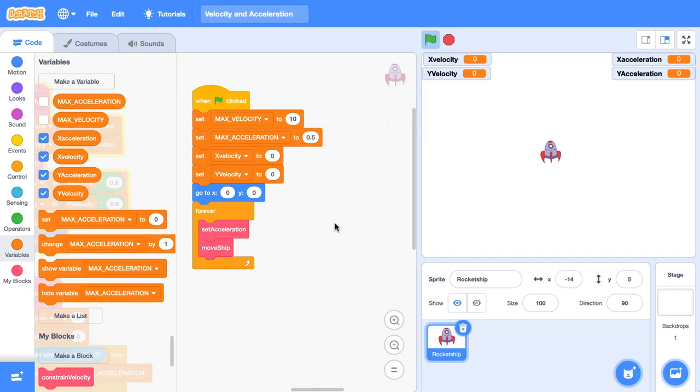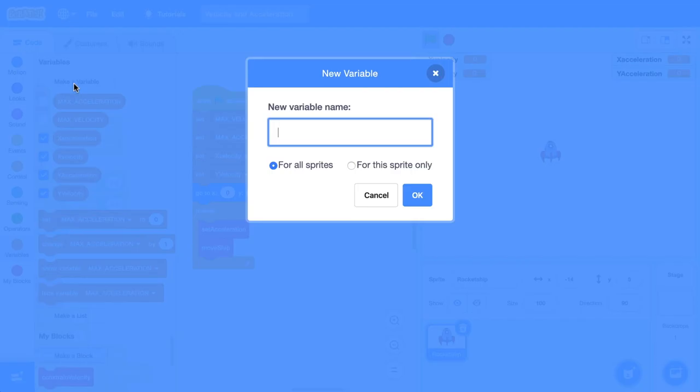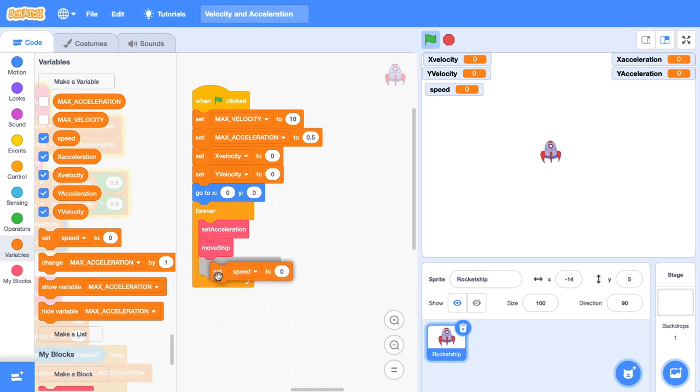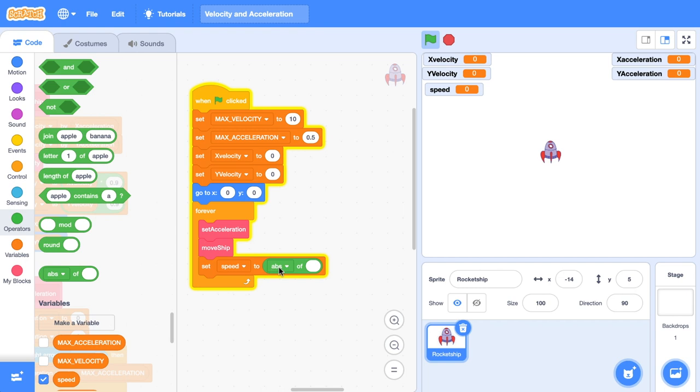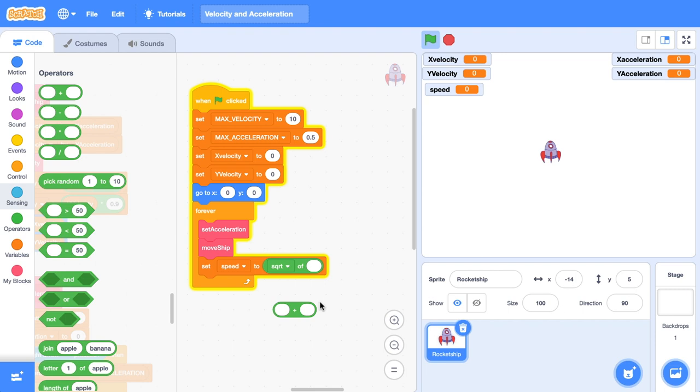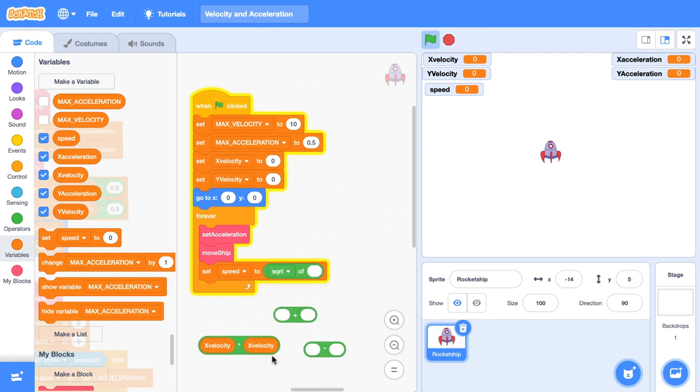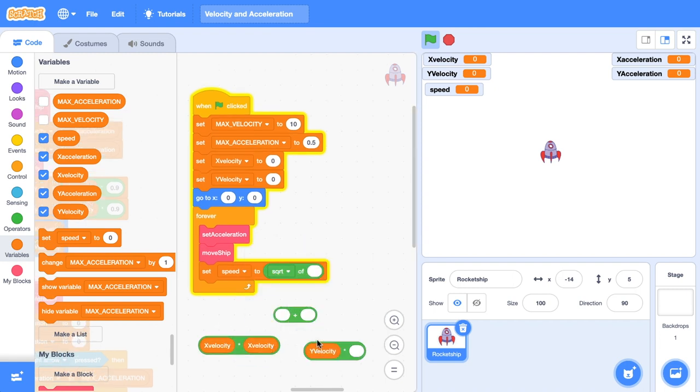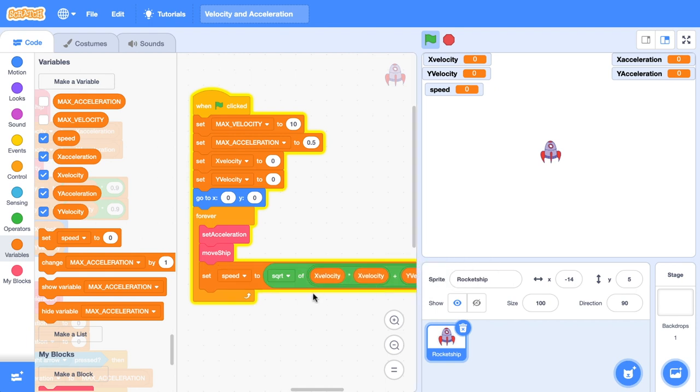I'm just over here in Scratch. Remember, grab the starter project if you don't have a copy of this already down in the description. Okay, we're going to make a new variable. We're going to call it speed. After we move the ship, we're going to set speed. We're not going to set it to zero. We need to go grab that operator and change it from the absolute value to the square root value. Remember, we need to add together the x velocity squared and the y velocity squared. So we're going to need some multiplication blocks. Then we want to get the x velocity, duplicate it and multiply it by itself. Then grab the y velocity and just grab two of them. And we're going to put those two values inside the addition operator. And then that whole block we're going to put inside the square root operator.